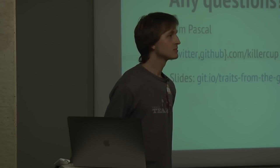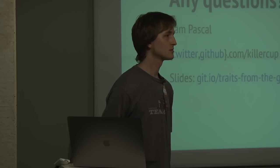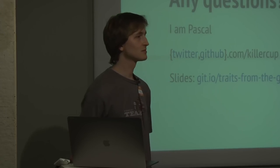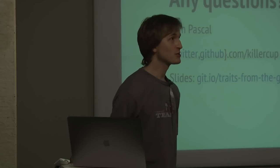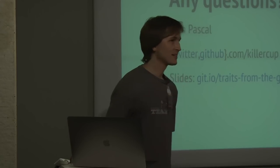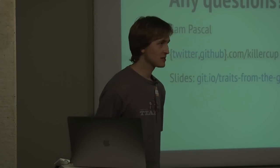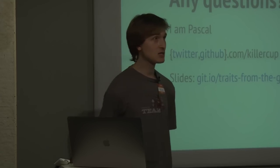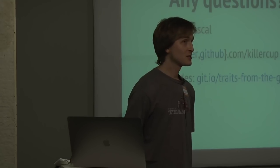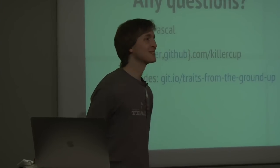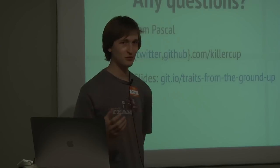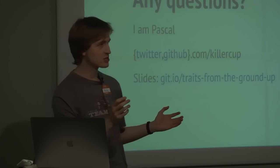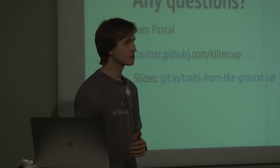Question: if I have a generic implementation of a trait and I want to specialize it for one type, how would I do that? I know there is a feature called specialization that is not yet stabilized, but I think part of it is already possible — maybe only with a feature flag. You can implement generic implementations of traits — for example, implement this trait for every type T that implements Display.